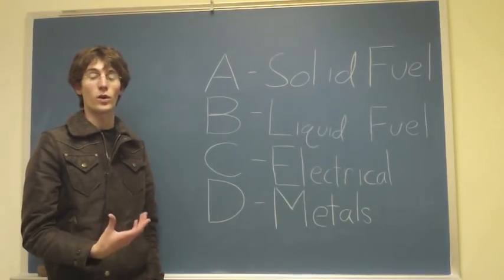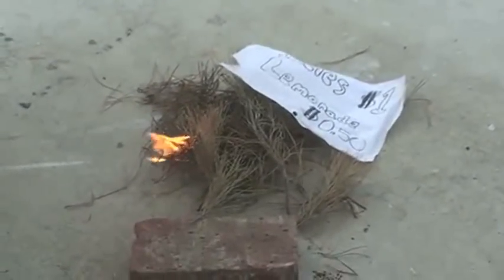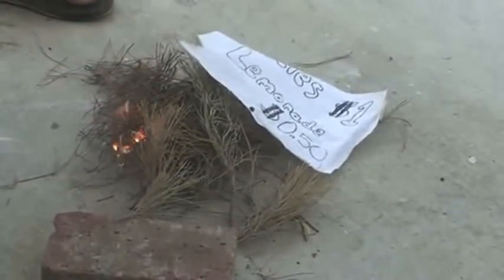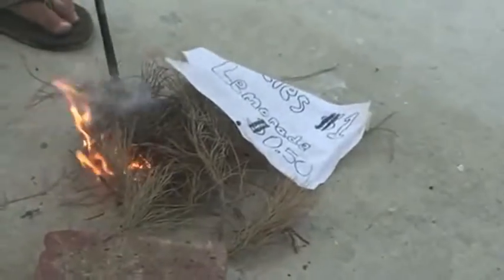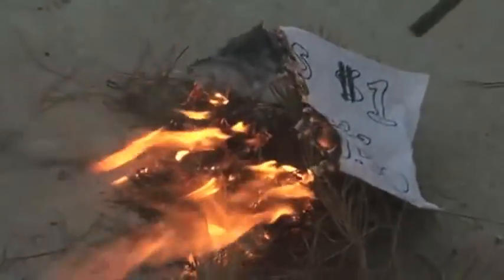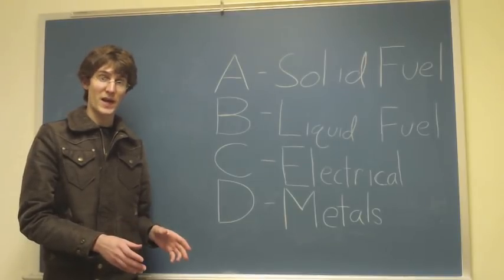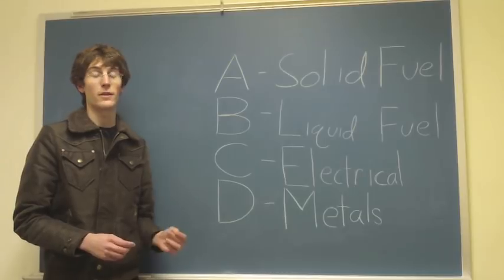Each of these is going to have a different way that you'll want to put it out. Starting with Class A, solid fuel — something like paper or a house — you're going to want to put it out using something as simple as water. Water is great for a Class A fire because of two properties. One is heat capacity: water is able to absorb a lot of heat from its surroundings without rising in temperature, so when you put water on a fire, it'll absorb all the heat and get rid of the fire. The second property is that when water hits the fire, it will vaporize and expand from liquid into gas, pushing the surrounding air away from the fire, causing the fire to suffocate.